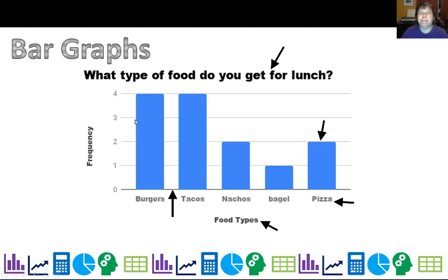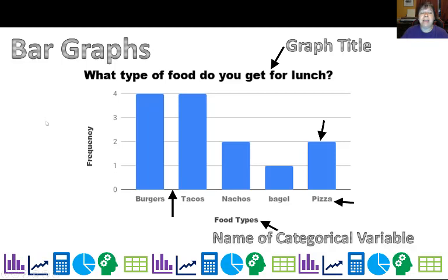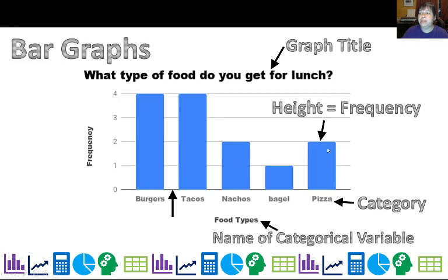I know most of you have seen bar graphs since middle school, probably even elementary, but let's go over the parts of the bar graph. First, you always have the graph title that tells you what the graph's about. Then you have the name of your categorical variable - here we have food type with different categories. The height of the bar is your frequency, telling you how many people selected that option.